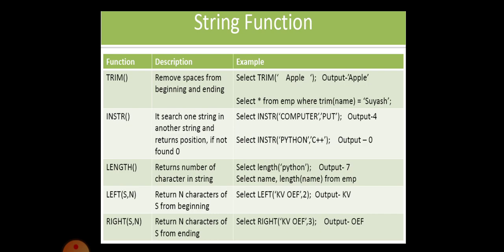LEFT(S, N) - the compiler will take the leftmost N characters. If you are giving the string like KVOEF, comma 2, it will take 2 characters from the rightmost side. And if you are giving RIGHT, it will take the characters from the leftmost of a given string. For LEFT, it will take left only. For RIGHT, it will take right only.